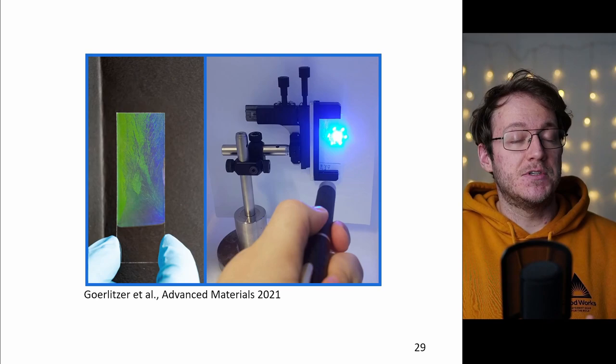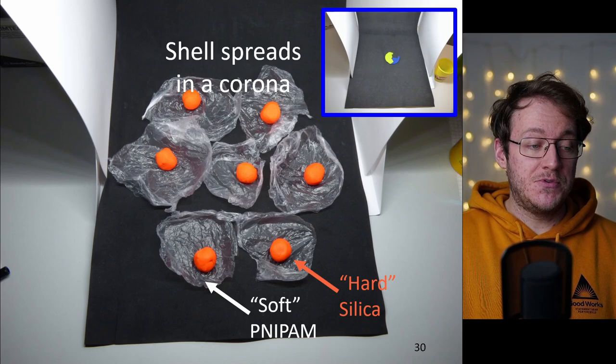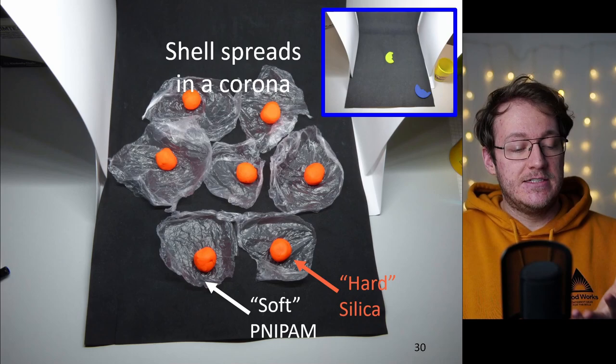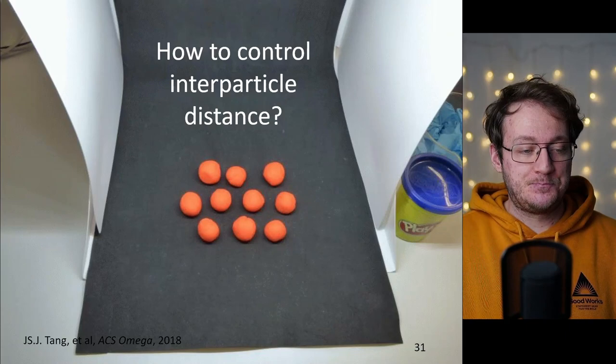In order to make them actually useful for colloidal lithography we need to get rid of this soft shell but this is very easy because we are having a silica core we can simply apply oxygen plasma and burn away the polyNIPAM shell.